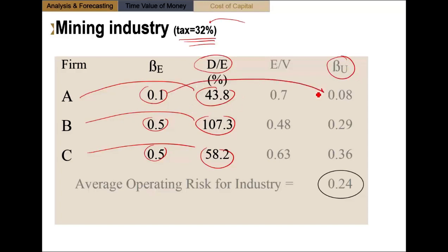So this 0.1 becomes 0.08, this 0.5 becomes 0.29, and this 0.5 becomes 0.36. How do we do that? Let me do this with the first, with company A. To find the unlevered betas for company A, what did we have to do? If you look at the formula, you'll see that you have to take the equity betas for that company and divide that by 1 plus 1 minus T, D over E. So how do we find the 0.08? We took the equity betas, which was 0.1, and divided that by 1 plus 1 minus, we're assuming a 32% tax rate, multiply times the D over E of that company, which is 0.438.